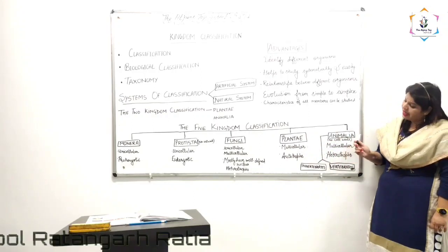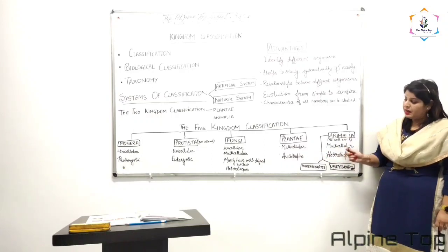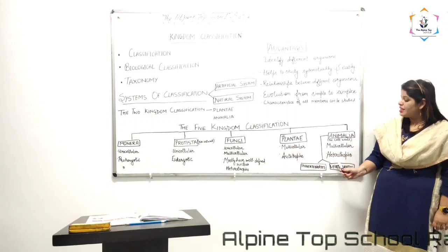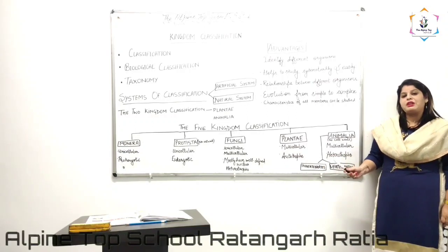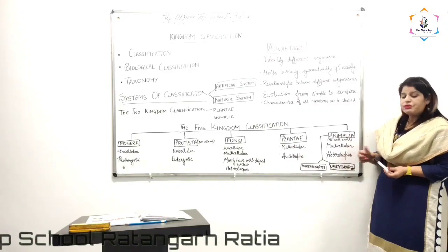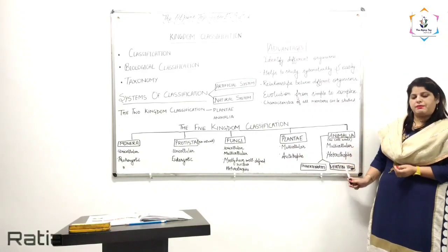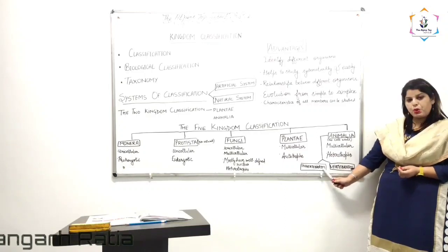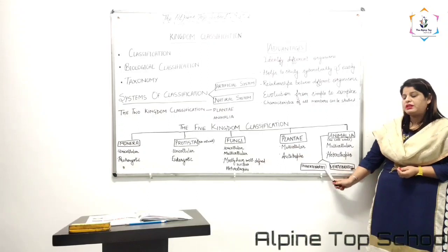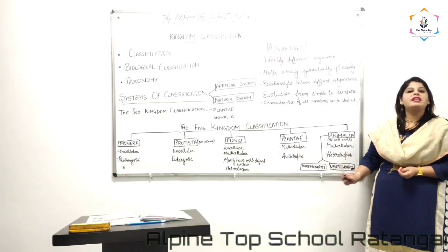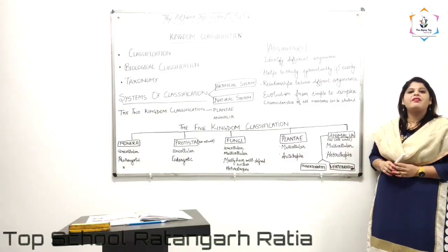The fifth kingdom is Animalia. Animals are also multicellular like Plantae, but they are not autotrophs — they are heterotrophs, meaning they cannot prepare their own food and have to depend on others. Animalia is further classified into two types: invertebrates, which are those that do not have any kind of backbone, and vertebrates, which are those that have a backbone.